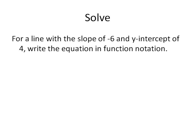So here's a question. For the line with the slope of negative 6 and a y intercept of 4, I'm going to write down the information that I have: slope is equal to negative 6, and my y intercept is equal to 4.